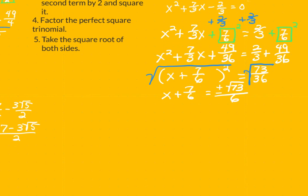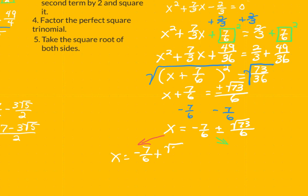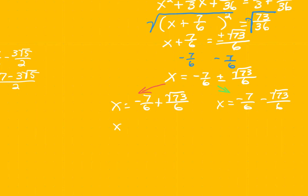Now I need to isolate x. I subtract 7 sixths from both sides, leaving x on the left. I then have negative 7 sixths plus or minus the square root of 73 over 6. So the two cases are: x equals negative 7 sixths plus square root of 73 over 6, and x equals negative 7 sixths minus square root of 73 over 6. If you need to write those as a single fraction, you could do it that way, following the rules of algebra and arithmetic.